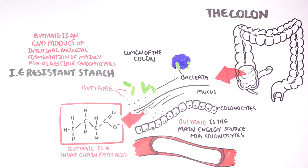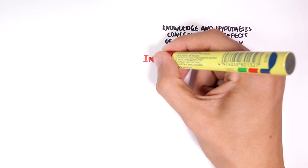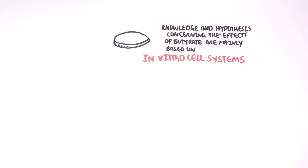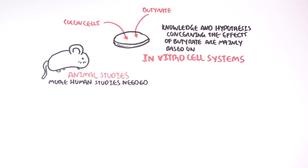There is increasing interest regarding the effects butyrate has on colon health. For example, studies have shown that butyrate prevents the development and progression of colon cancer. It should be pointed out, however, that the knowledge and hypotheses concerning the effects of butyrate are mainly based on in vitro cell systems and animal studies. More human studies are needed to support some of these findings. In this video we will explore and discuss the effects of butyrate on colon health based on current literature.